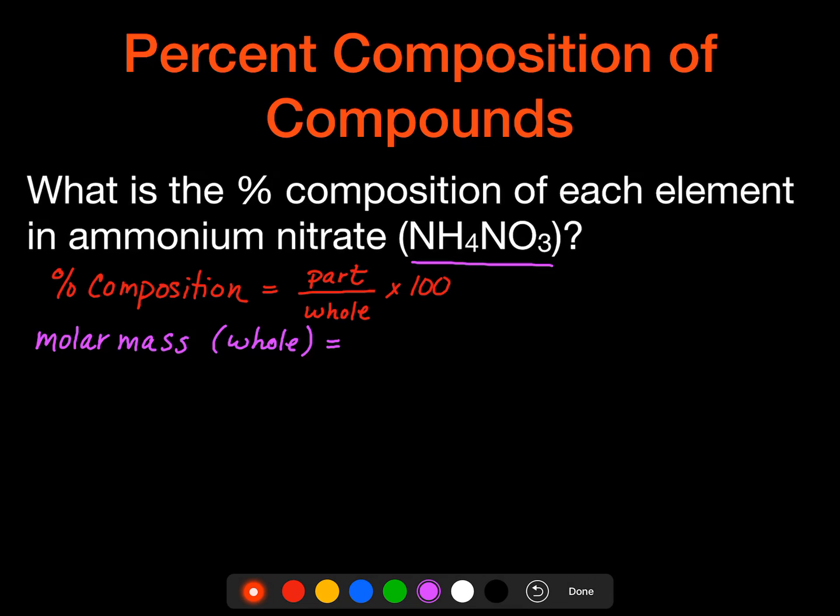So we're going to have, we actually have two nitrogens, even though they're not together. So we're going to do two times the mass of nitrogen, 14.01 grams, plus four times the mass of hydrogen, which is 1.008 grams, plus three times the mass of oxygen, 16.00 grams. Now I find when I do these, I don't usually calculate out each one of them separately before I add up my molar mass, but it actually will expedite my process a little bit here.